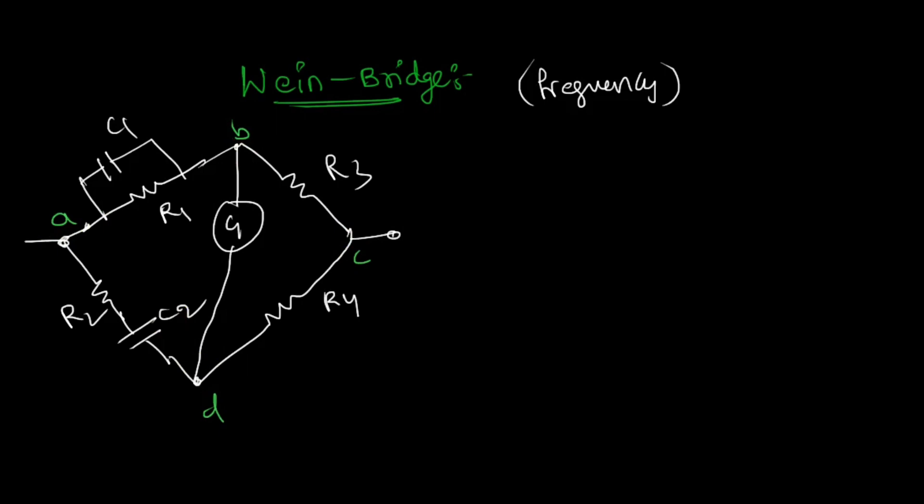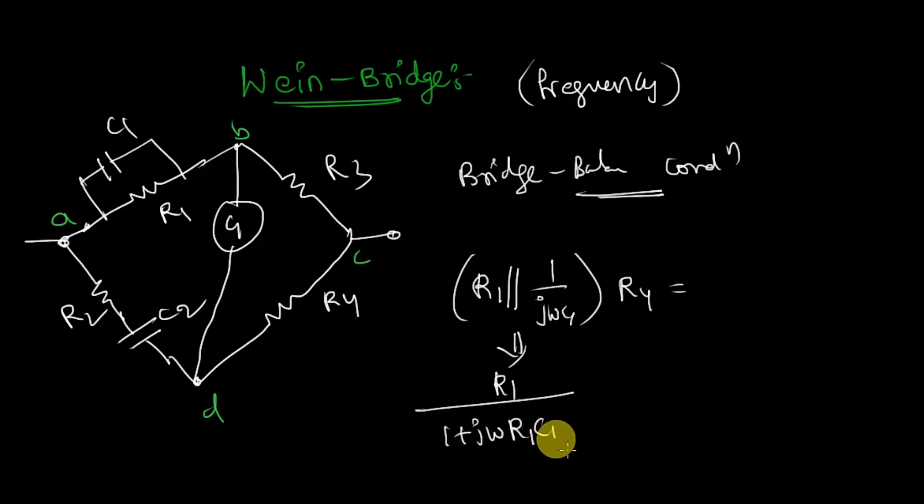The expression and derivation are all the same. Let me explain the bridge balance condition. So here you can get R1 in parallel with 1 by j omega C1. As this is almost the last video, I think no need to go into R4, no need to explain why, because we've already seen these types many times. So I will directly write the expression: R1 into 1 by j omega C1, by R1 plus 1 by j omega C1, which gives rise to R1 by 1 plus j omega R1 C1 into R4.